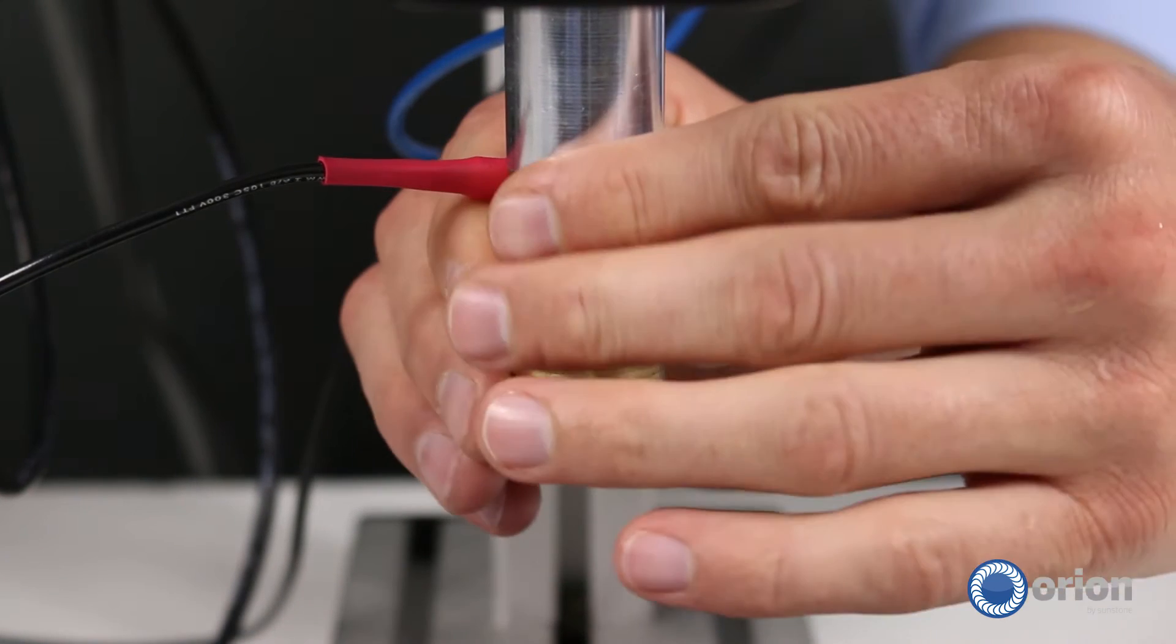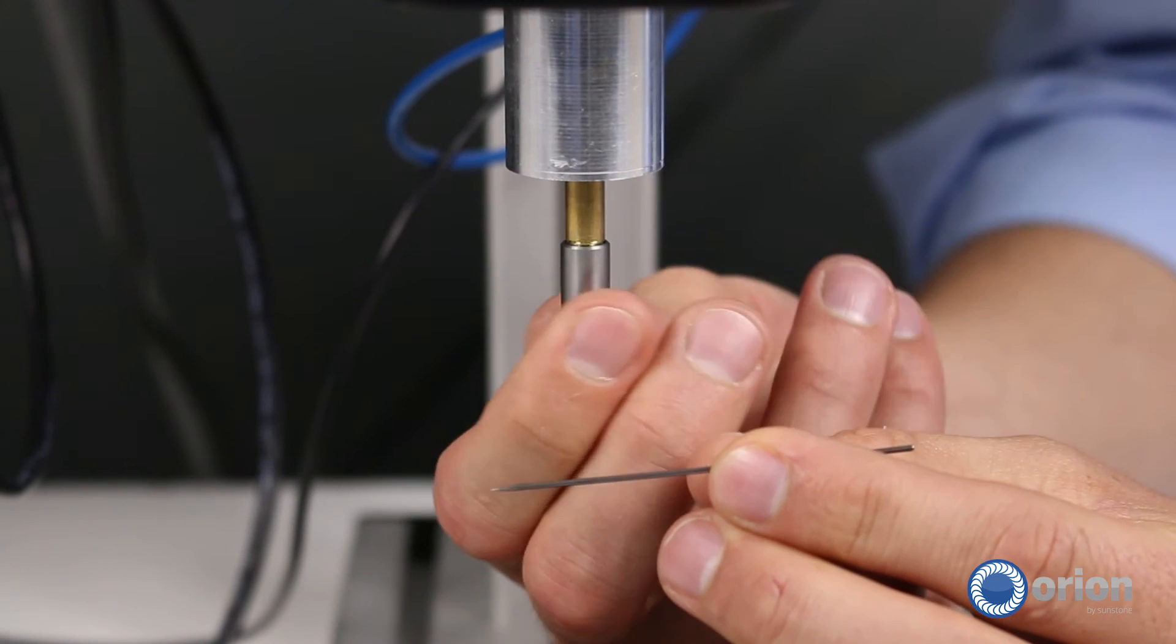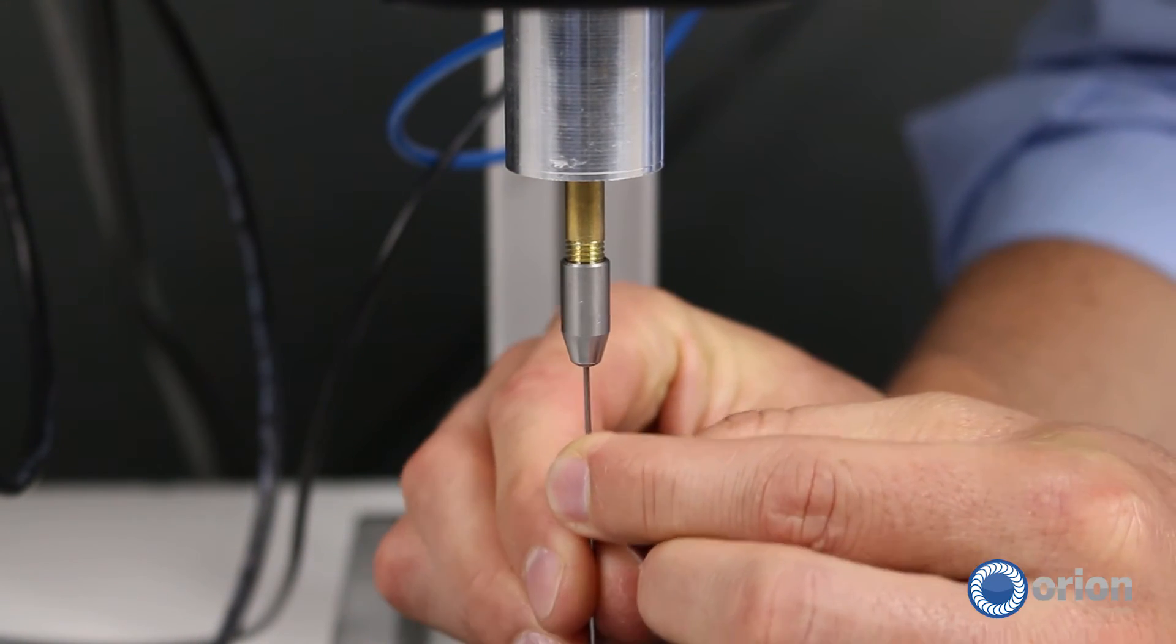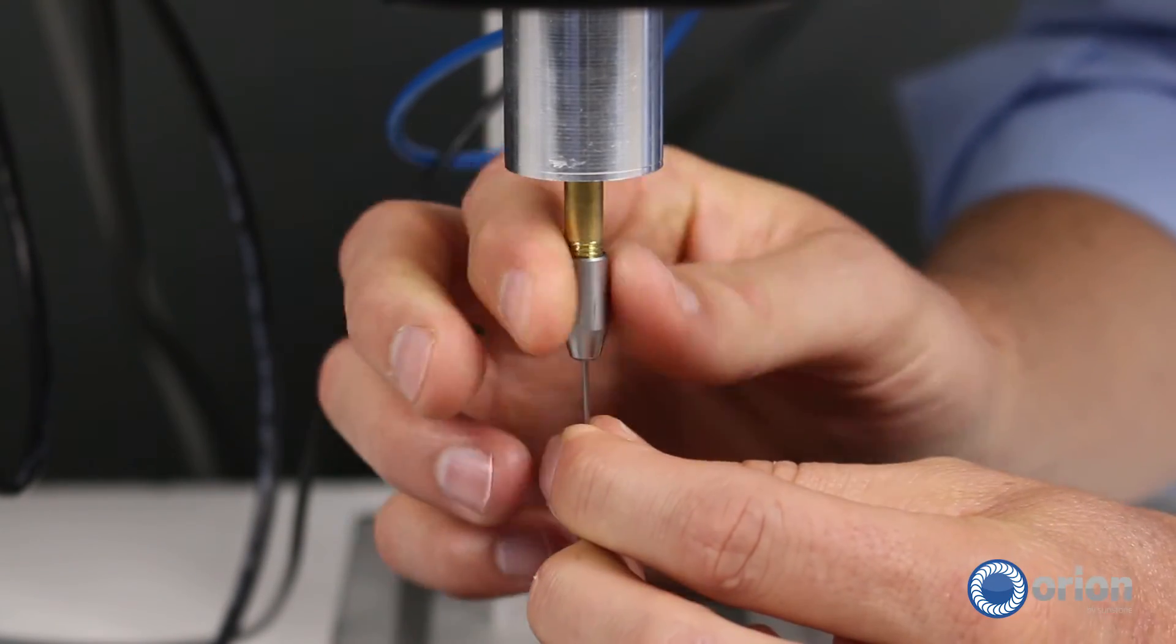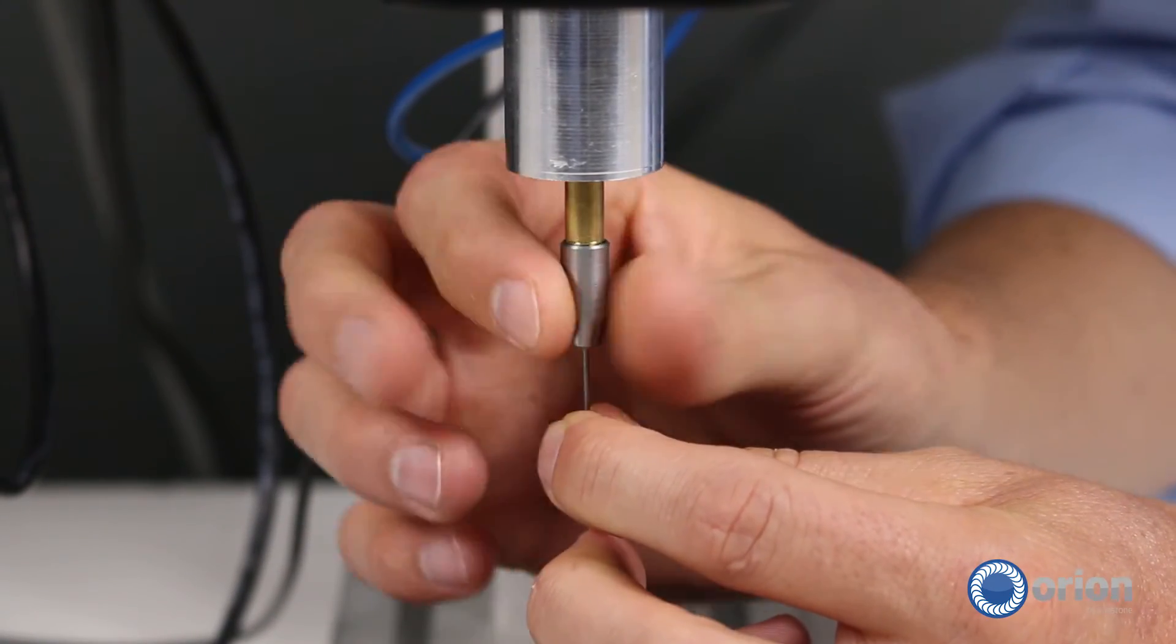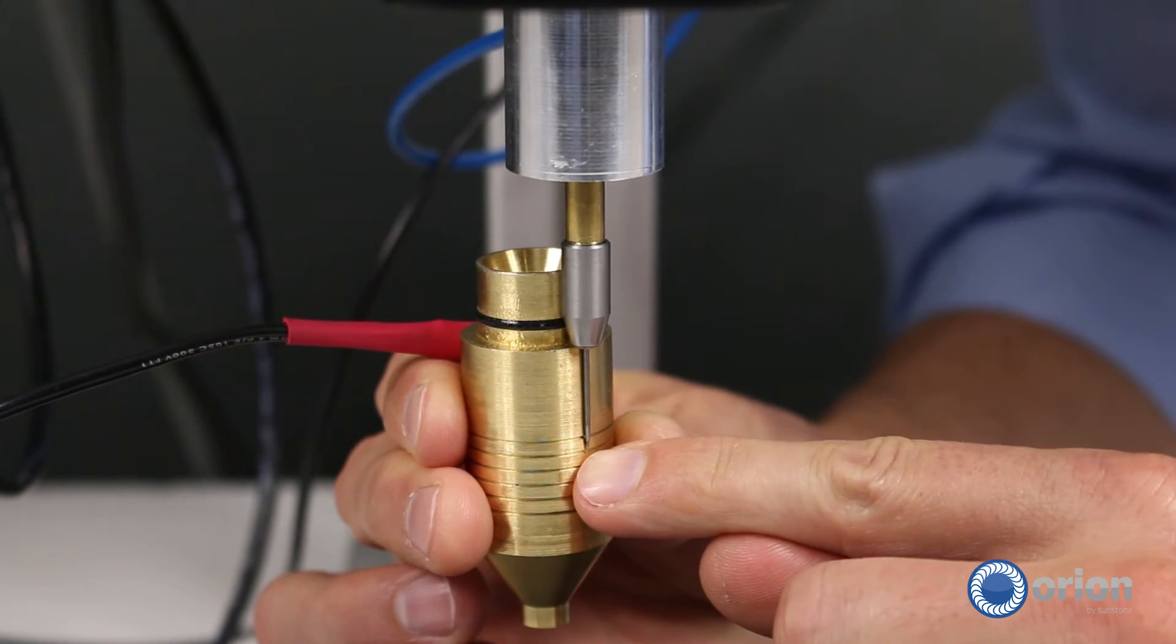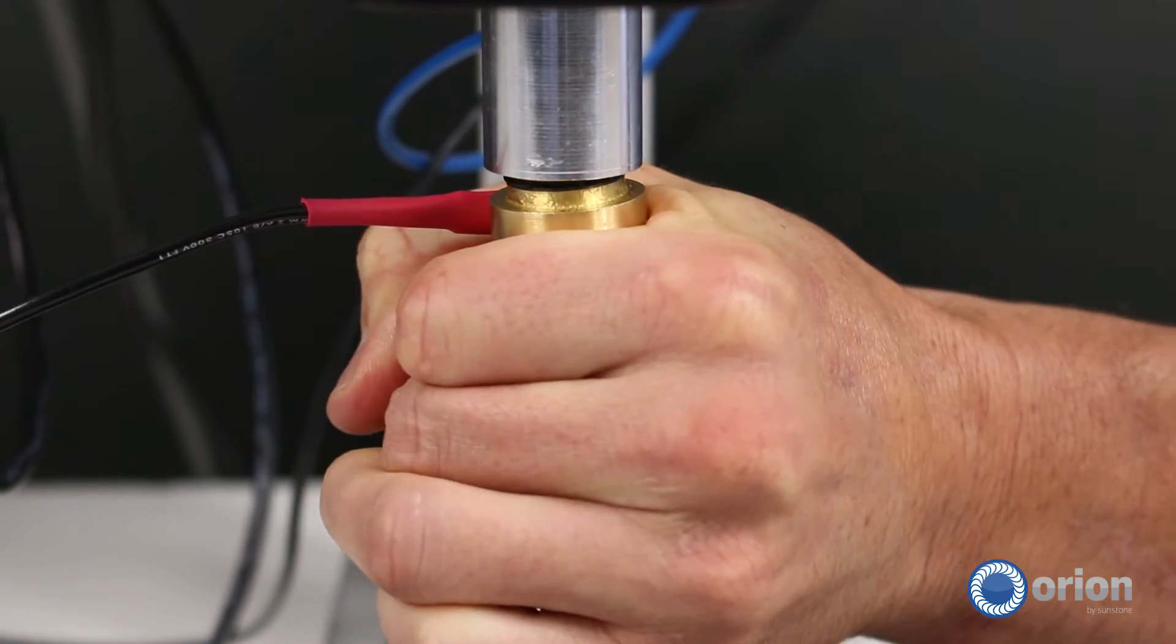Remove the nose cap from the weld head and twist the electrode holder counterclockwise to open the collet. Insert the electrode into the collet. Tighten the electrode holder clockwise to secure the electrode in place. The electrode should protrude about half an inch out of the holder. Now replace the nose cap.